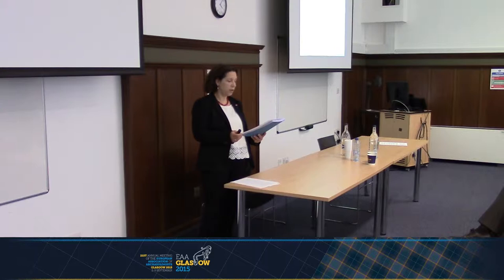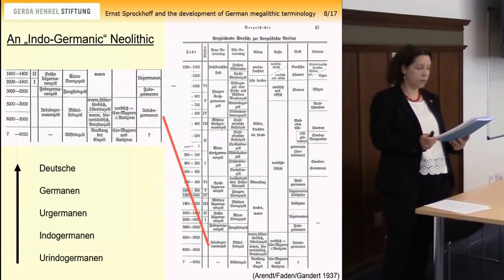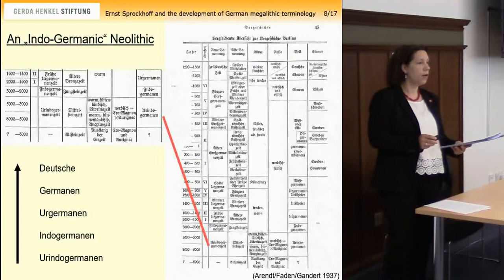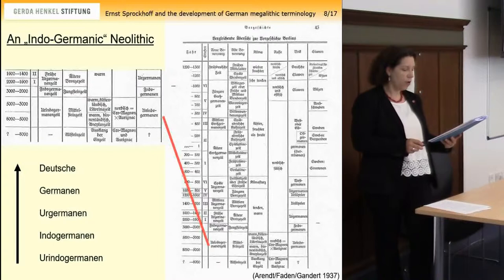From 1935 on, Sprokhoff functioned as second director of the Römisch-Germanische Kommission in Frankfurt, advancing to first director in the wake of Gerhard Bersu's emigration. He maintained his position as director of the commission during his military service in Norway until the end of the war. During the Third Reich, he evidently strove to prove the emergence of an Ur-Germanentum — original Germanicness — during the Stone and Bronze Age in the North German areas.